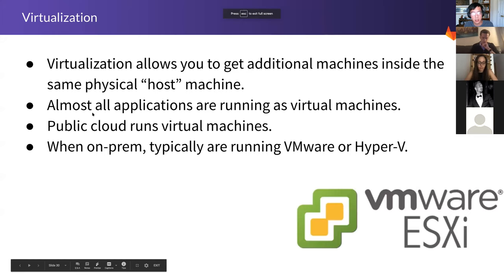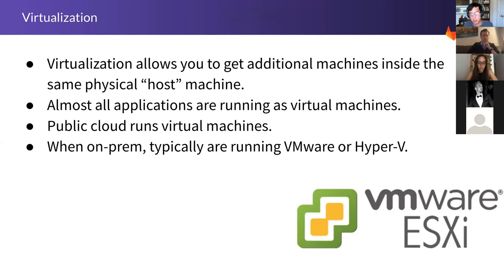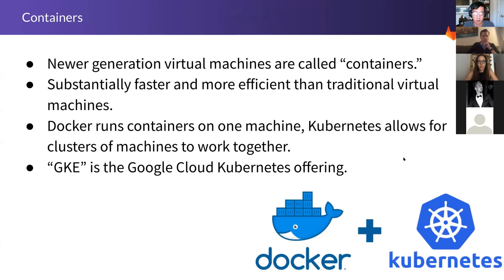Nowadays basically all applications are running as virtual machines — Amazon.com, YouTube, Netflix are running as virtual machines, probably in the public cloud. If you want your own servers you traditionally use something called VMware or Hyper-V. VMware is owned by Dell, and Hyper-V is owned by Microsoft.